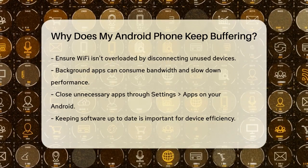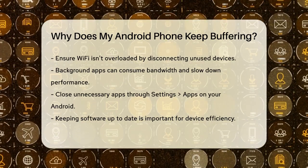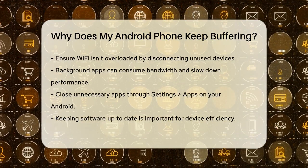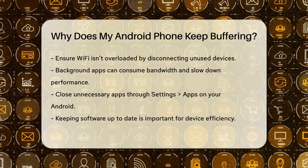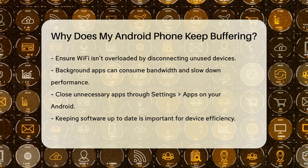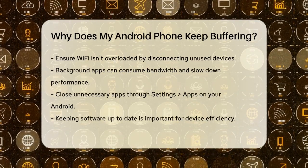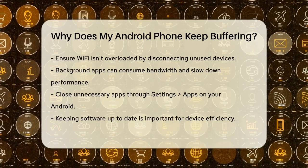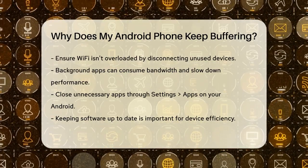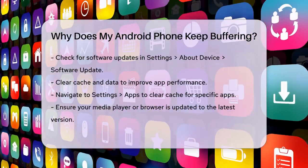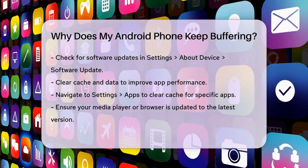Keeping your software up to date is also crucial. Outdated software can lead to inefficiencies and slow performance. Check for software updates by going to Settings, About Device or About Phone, Software Update, or System Update. Make sure your apps, especially video streaming apps like YouTube, are also updated to the latest version.